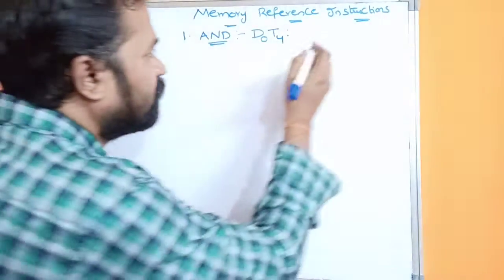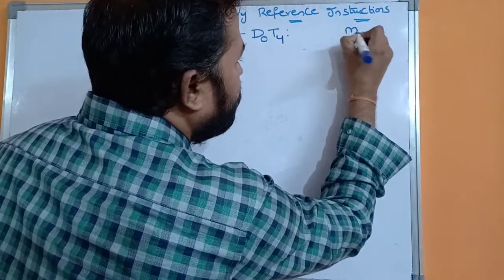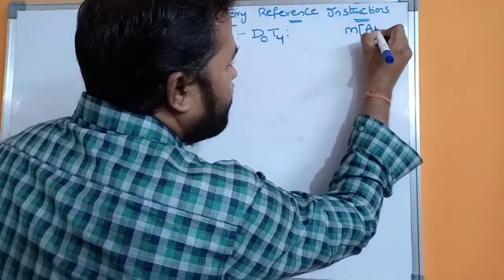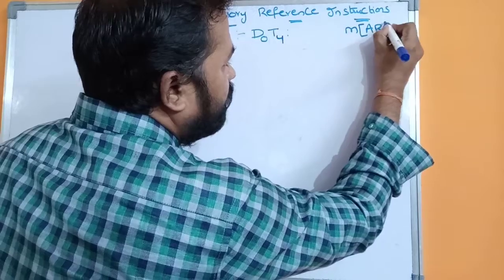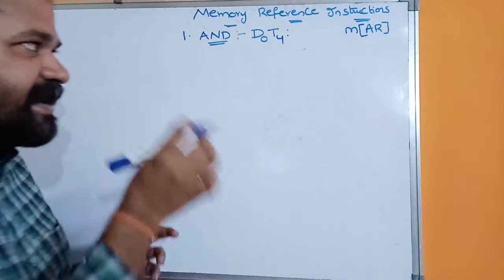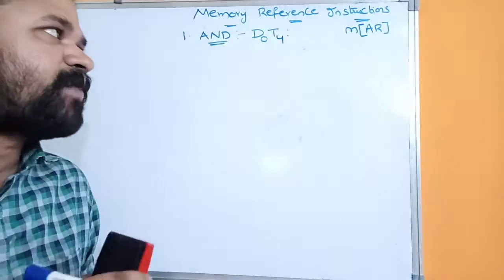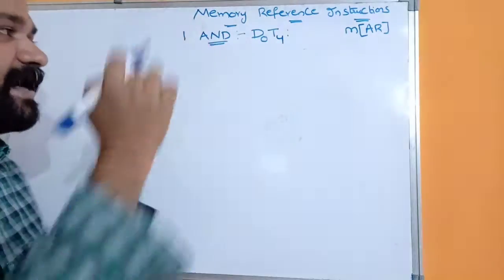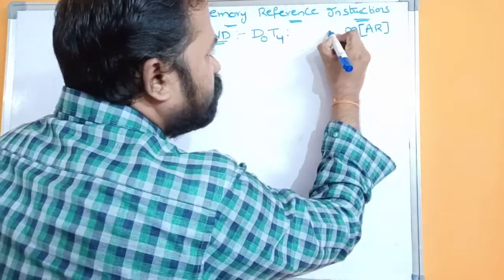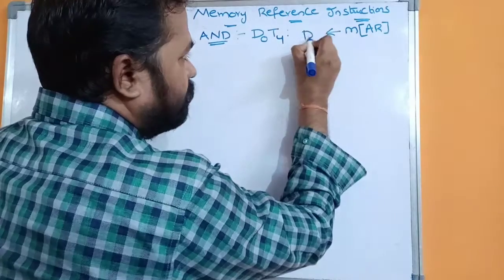The contents of the memory are specified by M of AR, where AR specifies the address register and M specifies the operand at that address. That content is to be transferred to the data register.